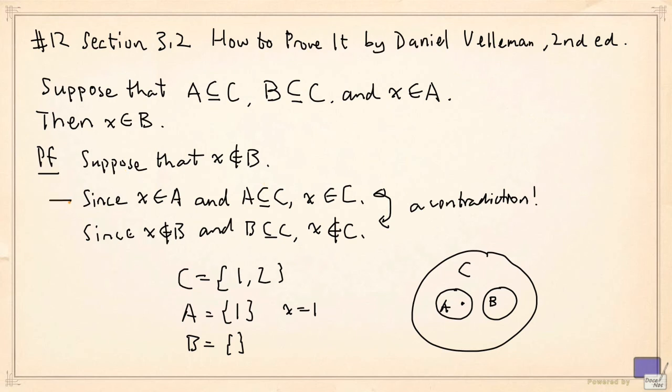What about the second line? x is an element of A, and A a subset of C implies that x is in C. That's certainly true, right? Because by virtue of being a subset of C, that means every element of A is an element of C. So if x is in A, then x is also in C. This picture also captures the argument.